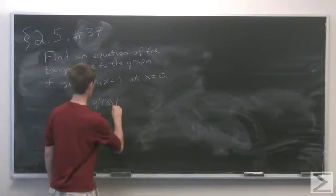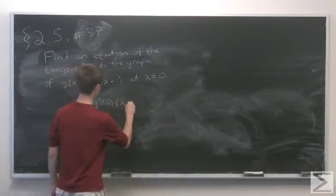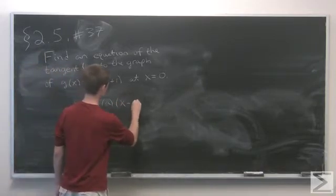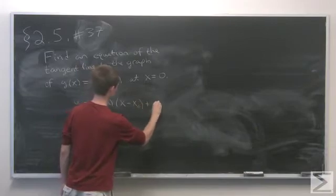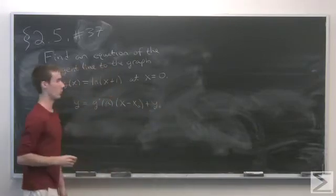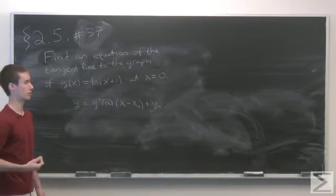The full formula is y equals g prime of a times x minus x0 plus y0, where (x0, y0) is the point on our graph.